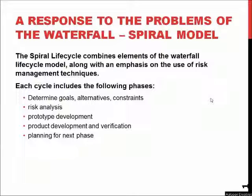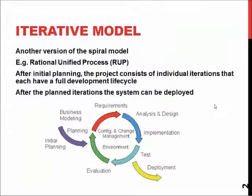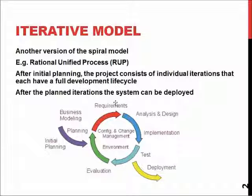One of the answers to the problems of waterfall is the spiral model. The spiral model combines the elements of the waterfall life cycle, but it has the emphasis on risk management. This means that the process applies a sort of iterative loop or cycle of planning, gathering requirements, doing analysis, implementation, testing, and evaluation.